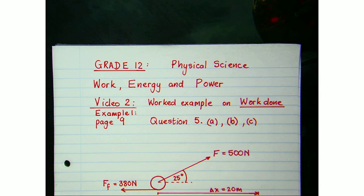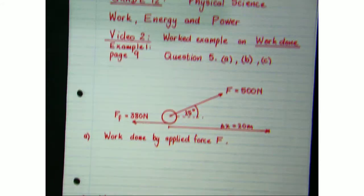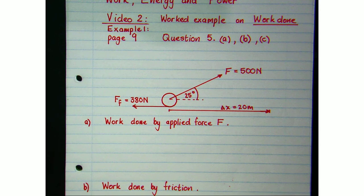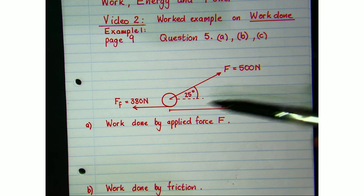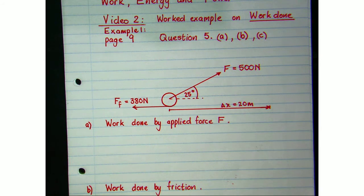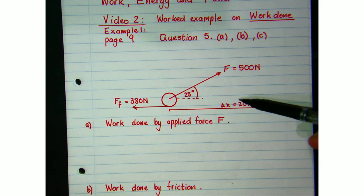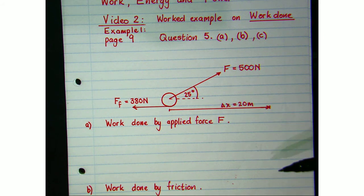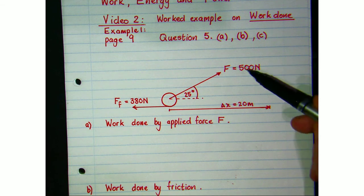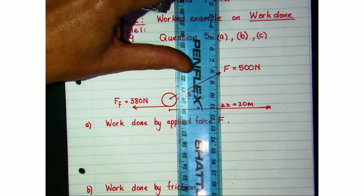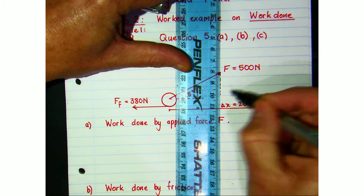We have an applied force of 500 newtons acting on an object over 20 meters, and at the same time there's a frictional force opposing its motion. The displacement is to the right over 20 meters, but the applied force is not acting parallel to the displacement. So the first thing we need to do is resolve that force into its components — let's find that horizontal component.